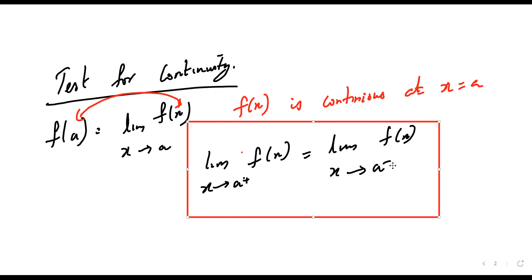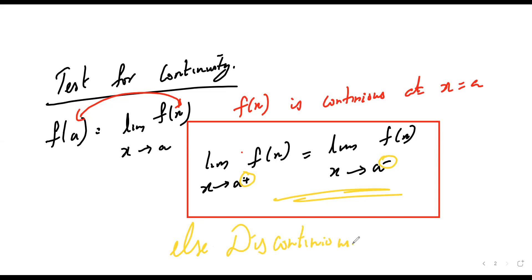So limit x tends to a+ of f(x) equals limit x tends to a- of f(x). Only the plus and minus differ; if these two things are equal then it will be continuous, else discontinuous. There is something called RHL and LHL - right hand limit and left hand limit.